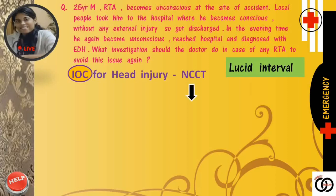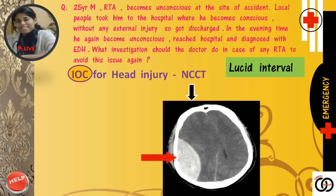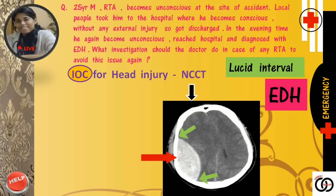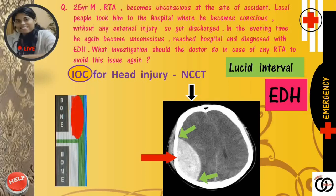Now see the scan of this patient. Can you appreciate a biconvex or lentiform-shaped hyperdense area? This is typical of epidural hemorrhage. See the bleed is limited by the coronal suture in the front and the lambdoid suture behind. But this bleed can cross the midline in the frontal area as there is no metopic suture in adults. Please remember, the lucid interval is common in EDH but is not exclusively found in EDH only. It's because of the rupture of the middle meningeal artery in the space between the bone and the endosteal layer of the dura mater.